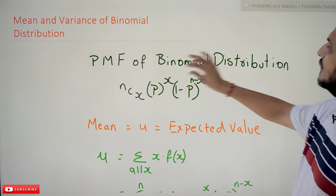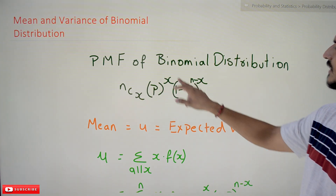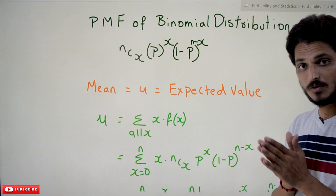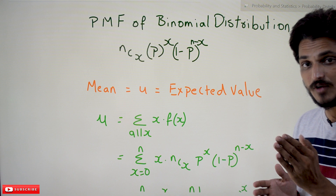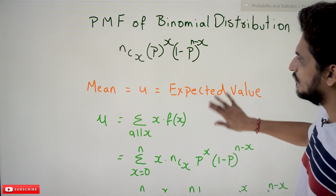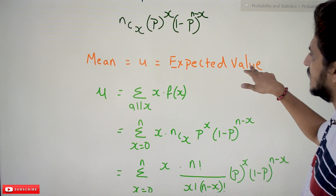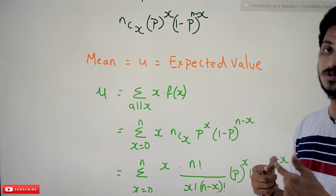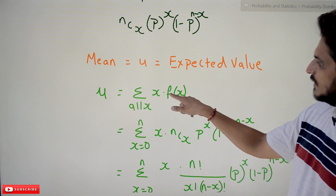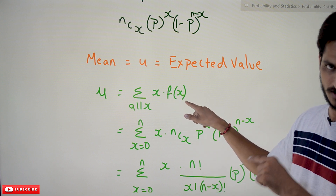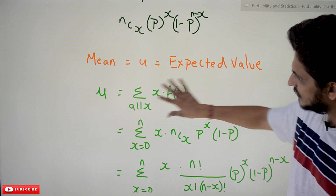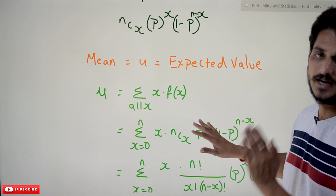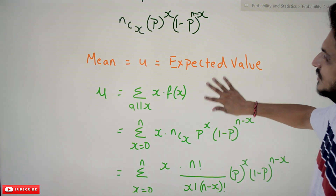Coming to today's class: the probability mass function of a binomial distribution is nCx · p^x · (1−p)^(n−x). In order to find the expected value or mean of a discrete probability distribution, we have the equation: mean μ = Σ x · f(x), where f(x) is the probability mass function. This is the equation to find the expected value of a discrete random variable.